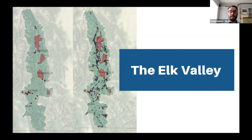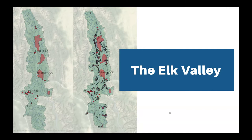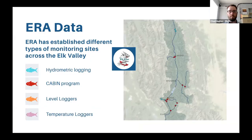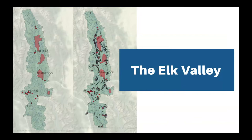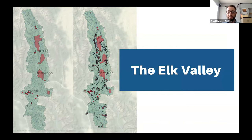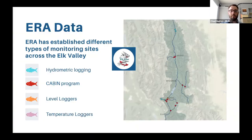According to the 2018 Elk Valley Cumulative Effects Assessment and Management Report, the Elk Valley has seen a 177% increase in total human footprint since the 1950s. We've seen an increase from about 5% to about 12% total human footprint if you include logging — and that doesn't include a large amount of private logging that has happened since 2018. So that takes us to why we are monitoring.